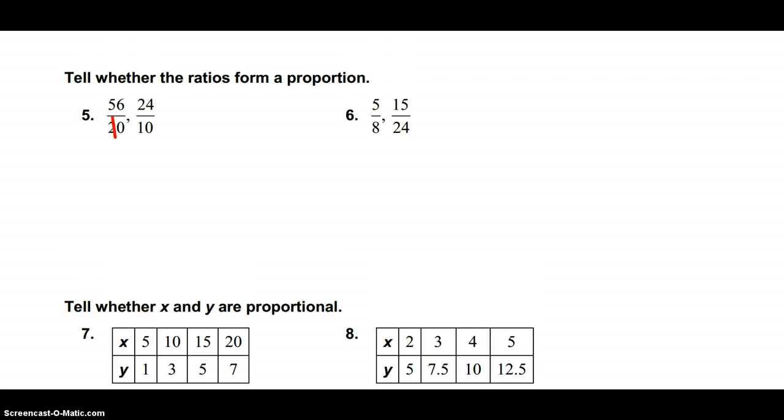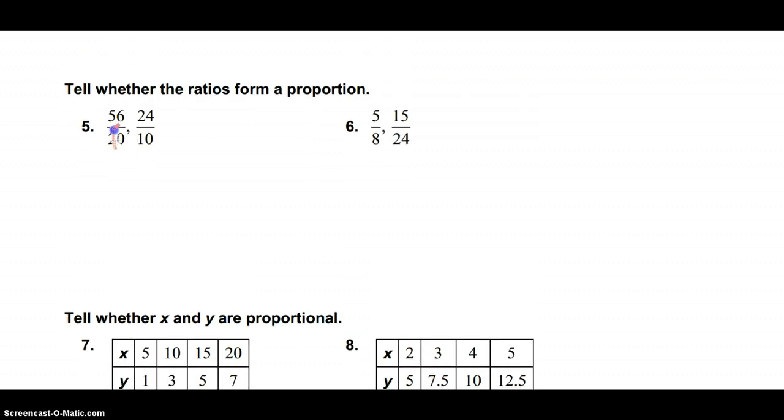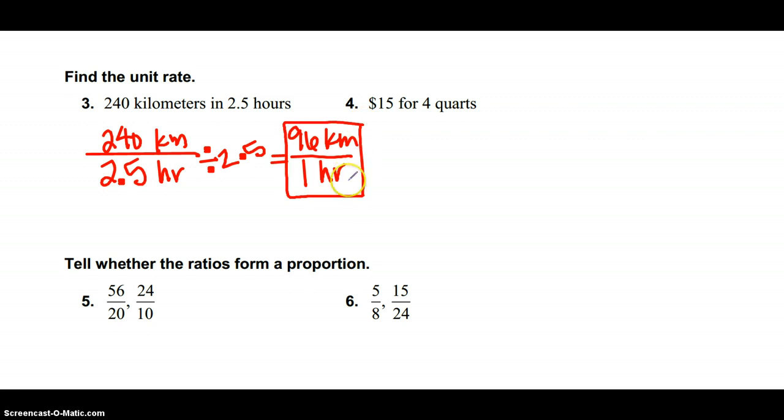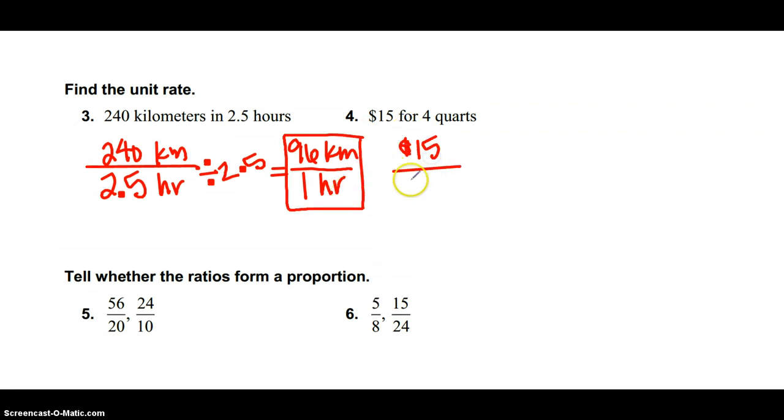3 and 4 is finding the unit rate. We have 240 kilometers over in 2 1⁄2 hours. To find the unit rate, you have to divide by the denominator. So if I divide both sides by the denominator, I'm divided by 2.5, and I get 96 kilometers per 1 hour. When you're finding the unit rate, you want the denominator to be 1. Number 4, $15 for 4 quarts. Need to divide by the denominator to find the unit rate, which gives me $3.75 per 1 quart.